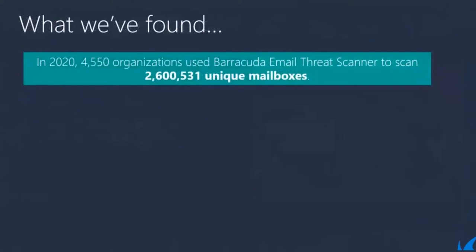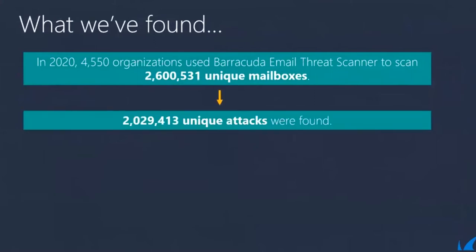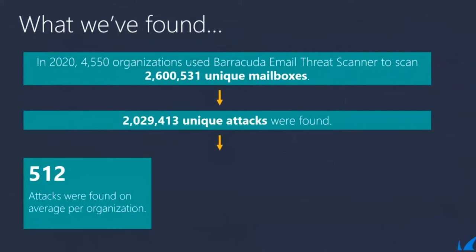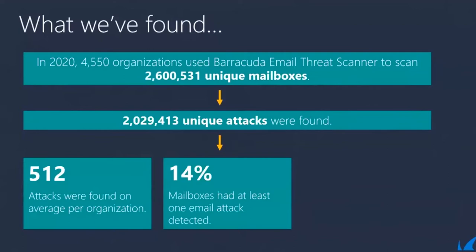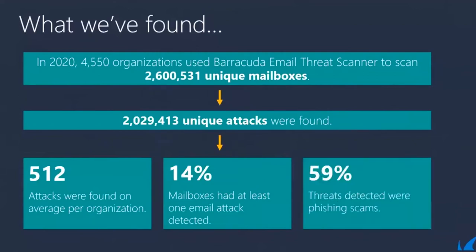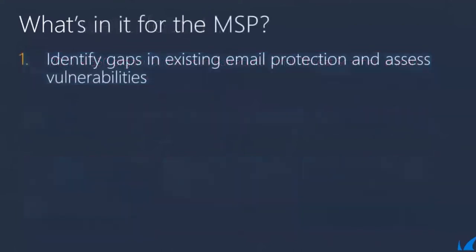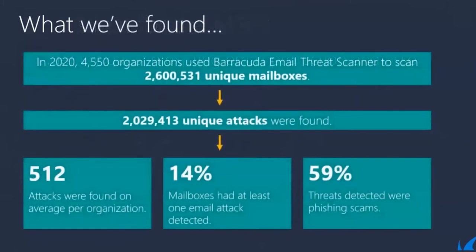In 2020, around 4,500 organisations used Barracuda's email threat scanner to scan 2.6 million unique mailboxes, and found just over 2 million unique attacks within those 2.6 million mailboxes. That's on average 512 attacks per organisation which have gotten past the gateway. 14% of those had at least one email attack detected within a mailbox, and 59% of them were phishing scams. The second most common threat type was scamming at 39%, followed by extortion at 9%, and business email compromise at 8%.